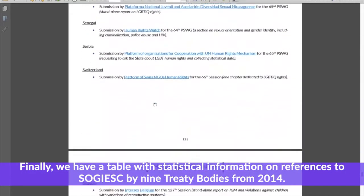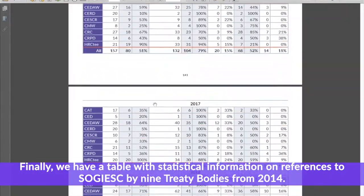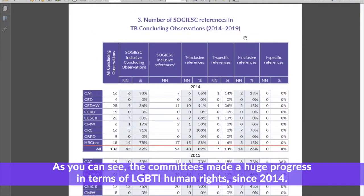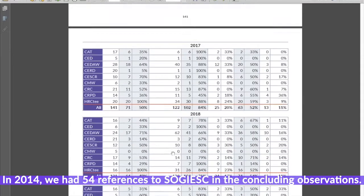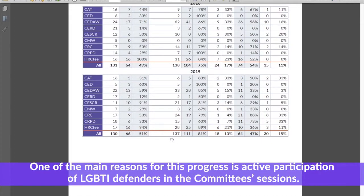Finally, we have a table with statistical information on references to SOGI/ESC by the nine treaty bodies from 2014. You can see specific data on trans and intersex references as well. As you can see, the committees have made huge progress in terms of LGBTI human rights since 2014 — in 2014 we had 54 references to SOGI/ESC in concluding observations, and in 2019 we already had 137 such references. One of the main reasons for this progress is the active participation of LGBTI defenders in committee sessions.